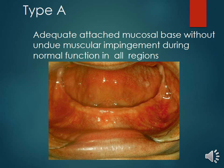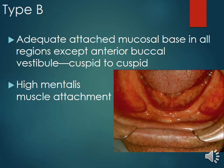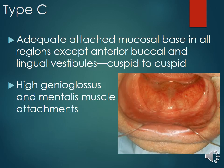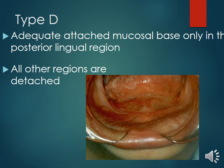Muscle attachment types for the mandible follow a logical progression. Type A: adequate attached mucosal base without undue muscular impingement during normal function in all regions. Type B: adequate attached mucosal base in all regions except the anterior buccal vestibule, with a high mentalis muscle attachment. Type C: adequate attached mucosal base in all regions except the anterior buccal and lingual vestibules, with high genioglossus and mentalis muscle attachments. Type D: adequate attached mucosal base only in the posterior lingual region; all other regions are detached.